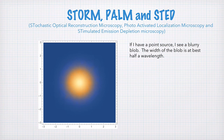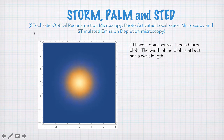Having described the diffraction limit and where it comes from, there are techniques that beat the diffraction limit. The main techniques people talk about are called STORM, PALM, and STED — Stochastic Optical Reconstruction Microscopy, Photo-Activated Localization Microscopy, and Stimulated Emission Depletion Microscopy.